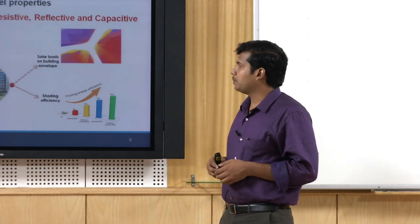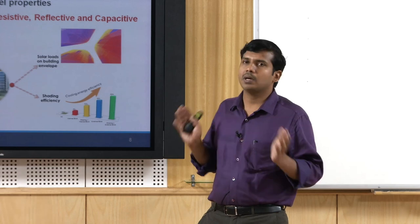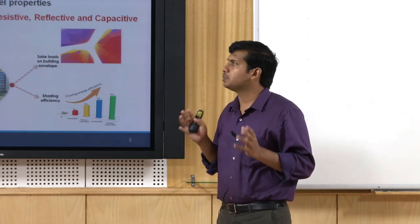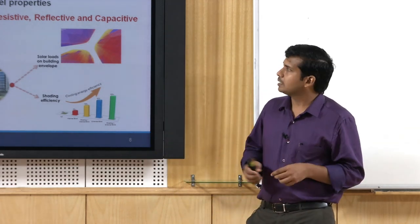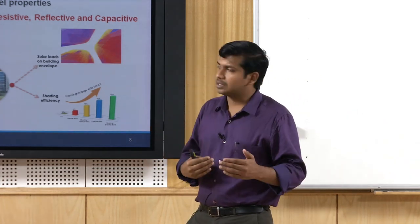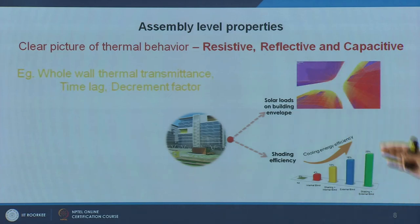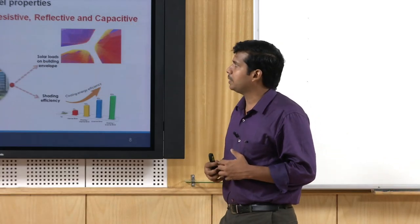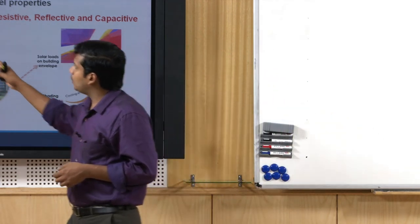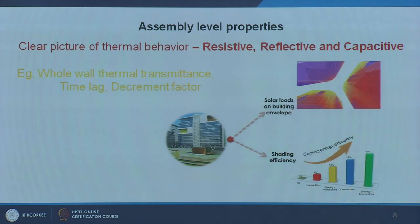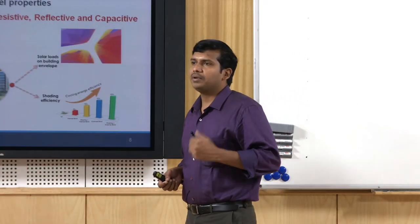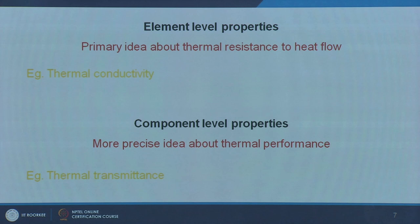For example, thermal transmittance of a 230 mm brick wall or a 200 mm thick solid concrete wall gives a better idea than element level performance about heat flow. The next level is assembly level properties — say a window frame and wall assembly — and what happens to the overall performance of that wall system. This is more critical and gives a very clear picture about all three types of heat transfer: resistive properties, reflective properties, and the capacitive or heat-storing capacity of the whole assembly.